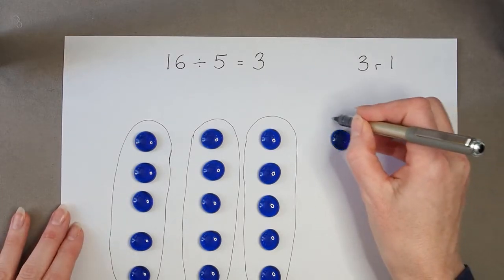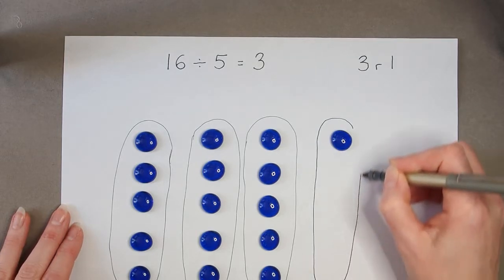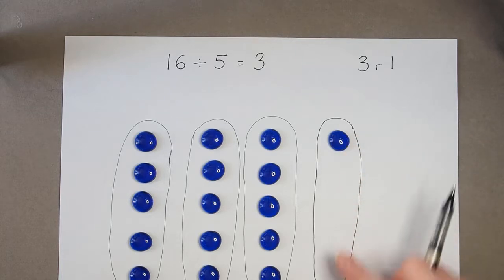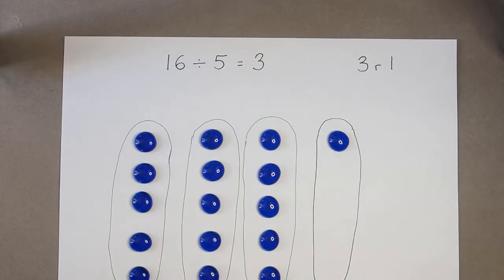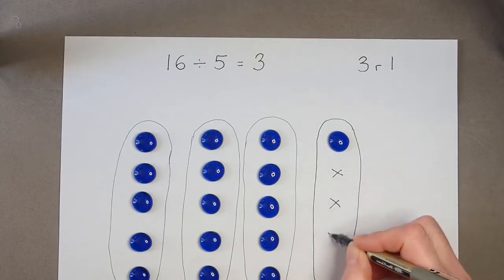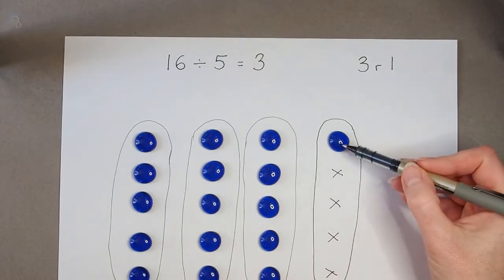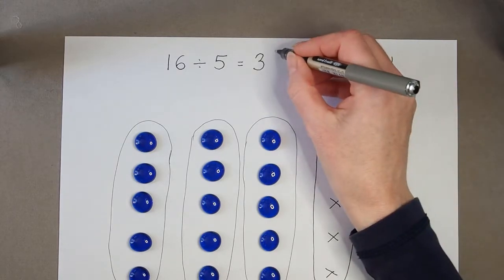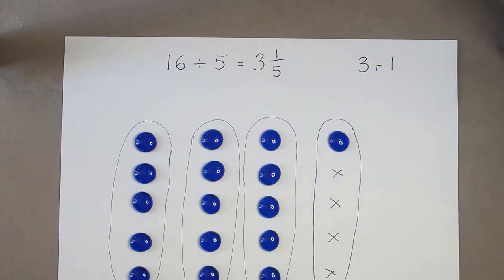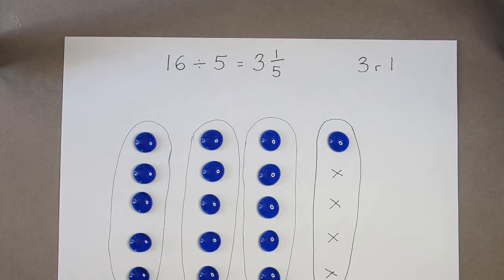If I need to think about making another group, I need to think what fraction of this group is that 1 remainder. So in that group all together I need 5 counters but I've only got 1 of them. So I have got 1 counter out of the 5 counters that I need to make the group which is 1 fifth. 1 out of 5 is the same as saying 1 fifth.